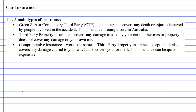First of all we want to talk about the three main types of insurance. The first one is what's called a green slip, or compulsory third-party insurance (CTP). This insurance covers any death or injuries incurred by people involved in the accident — it's not about fixing cars or property, it's purely about covering damage caused to people. This insurance is compulsory in Australia; you cannot drive your car without it.